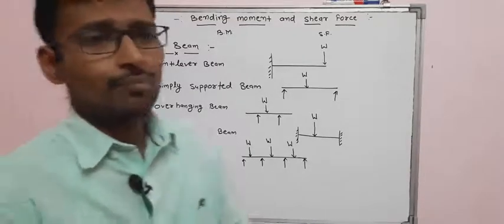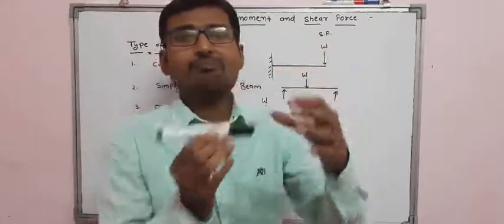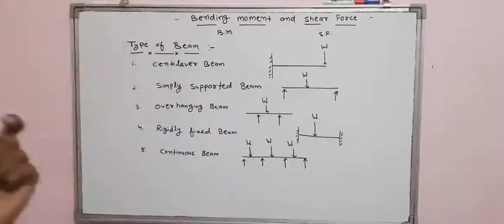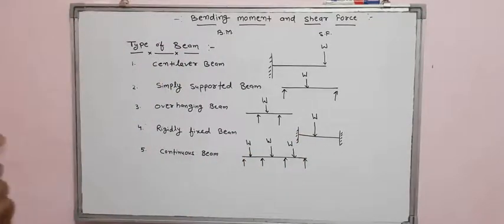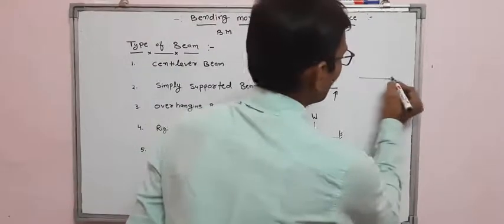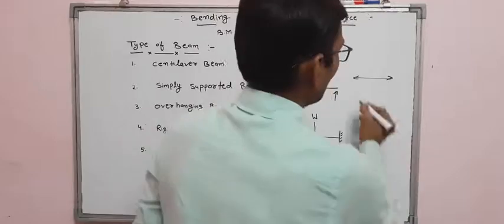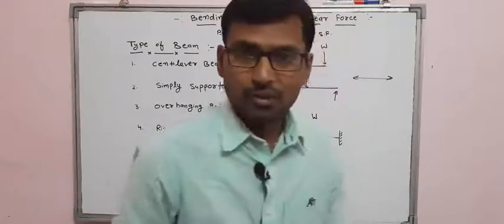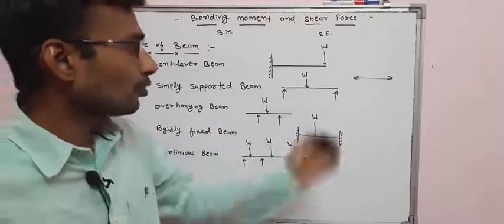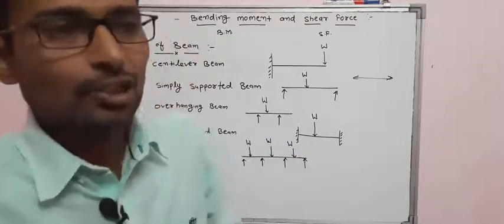A beam is a horizontal structural member. When the axis is vertical, it is called a column. So here are the columns — we can show that a table-like structure has beams running horizontally.